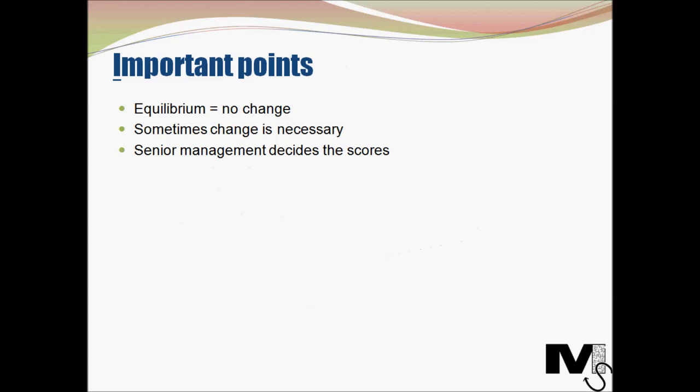As per Lewin's model, if the two forces are in equilibrium, then there should be no change. Change can only be successful if the driving forces outweigh the resisting forces. So if they are in equilibrium, then there should be no change. And if change is absolutely necessary — for instance, in situations where there is a government regulation that the company needs to comply with — then management has to find ways to reduce the resisting forces and then implement the change.